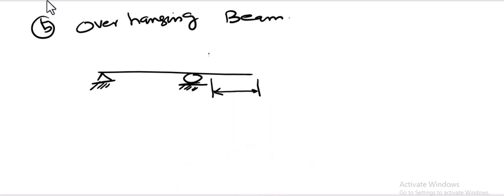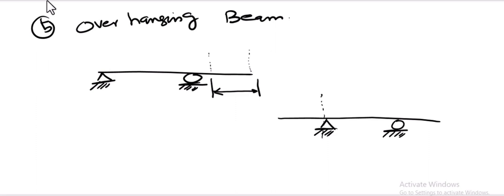Any beam whose one portion or both portions extend beyond the supports is called an overhanging beam. For example, if there is a beam with a hinge support and a roller support and portions extend beyond the supports on both sides, then both sides have an overhanging portion and this beam is called an overhanging beam.